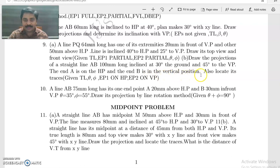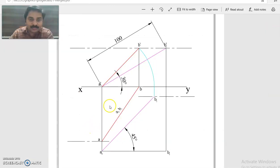Also locate its traces. This is a problem where the distance of A with respect to HP is given, and the distance of B with respect to VP is given. That is, end A is on HP and end B is on VP.